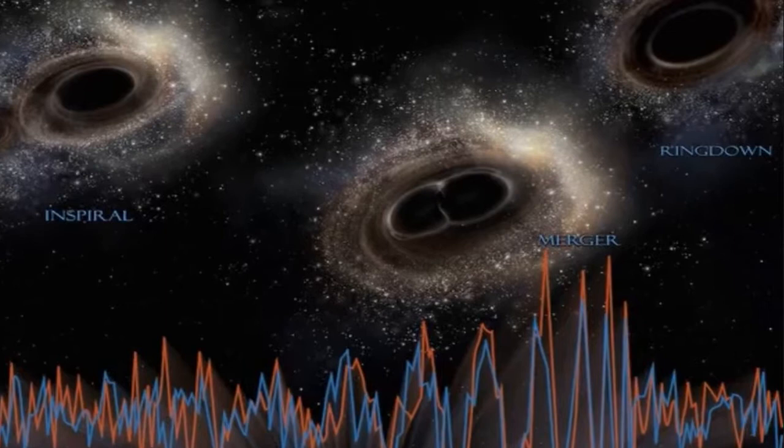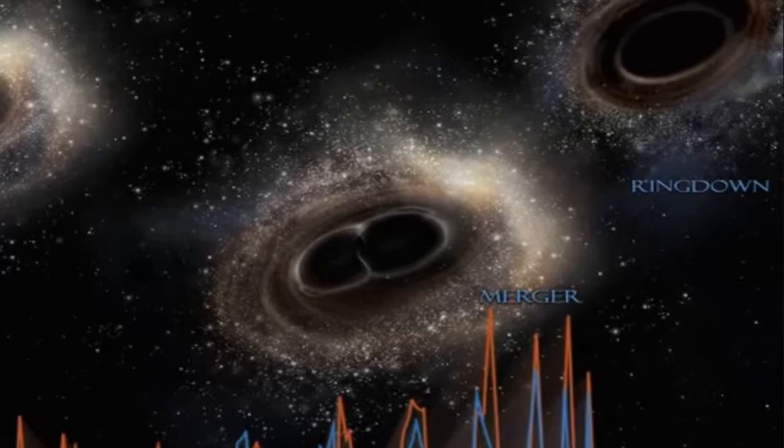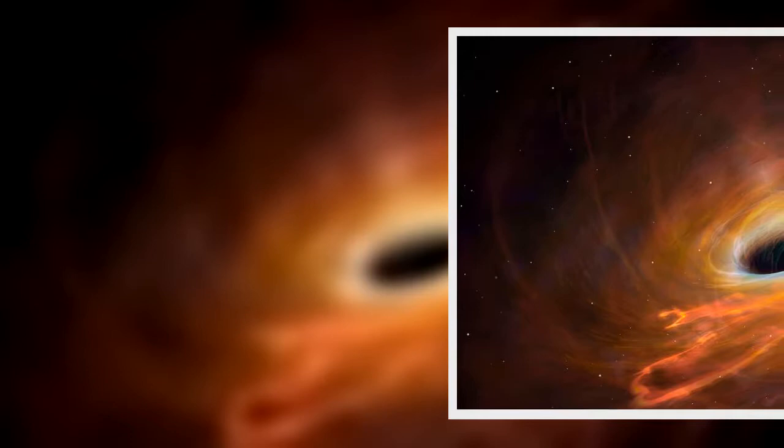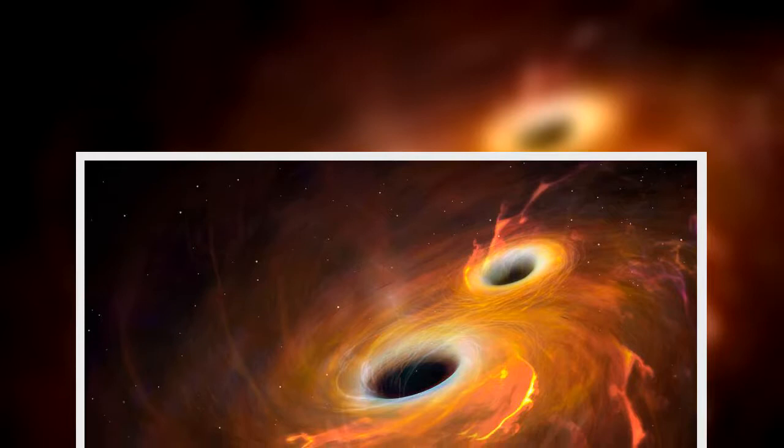The amplitude reveals how distant this cosmic collision is from Earth, and it turns out this smash-up occurred 1.3 billion years ago. The left-hand side of the image shows the two black holes inspiraling, meaning that as they rotate around each other, the distance between them decreased, and they twirled faster and faster.